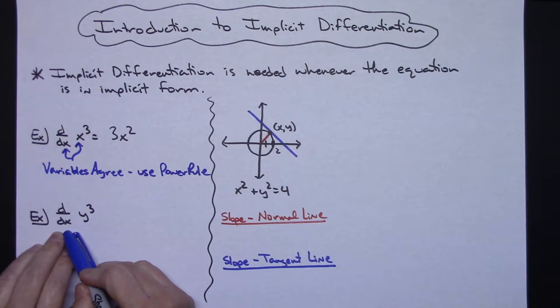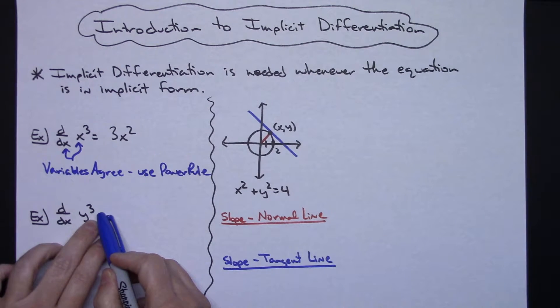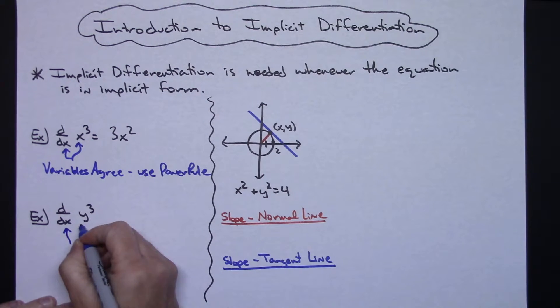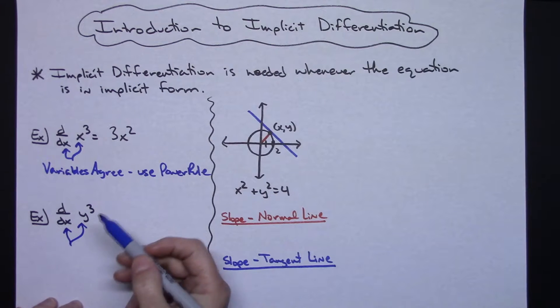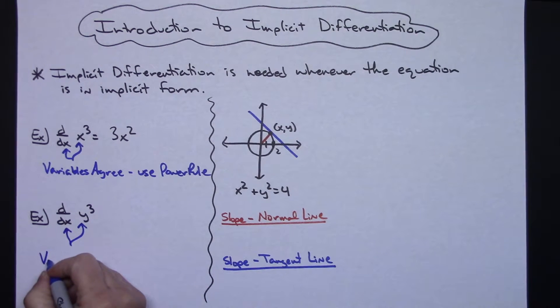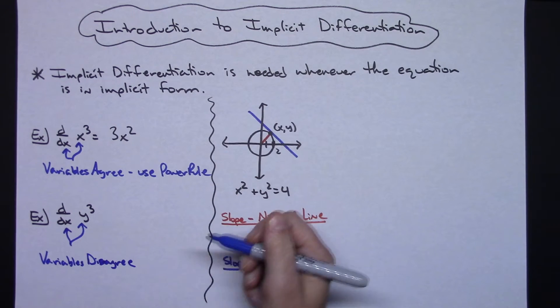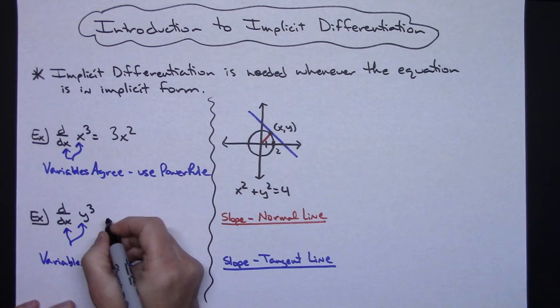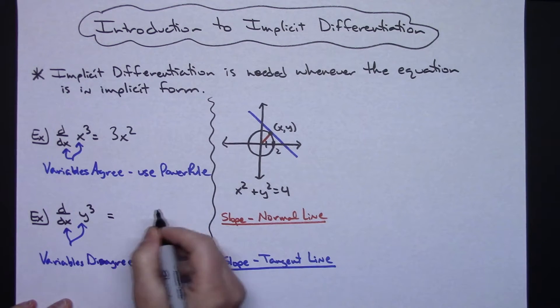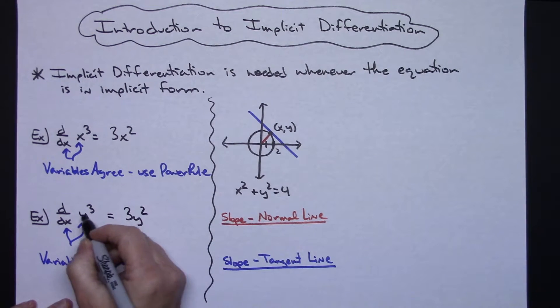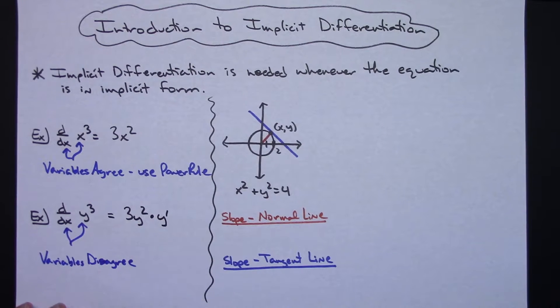Now if I'm trying to take the derivative of, say, a y to the third, notice now that the variables disagree. I'm trying to take the derivative with respect to x, but I've got a y to the third in there. Which means when I take the derivative, I have to apply a chain. That's your implicit differentiation. So I'm going to do power rule like normal. So 3y squared, but then the inside function is a y. So I'm going to put a y prime in there. That's where I have a chain rule.